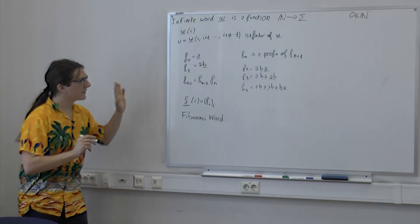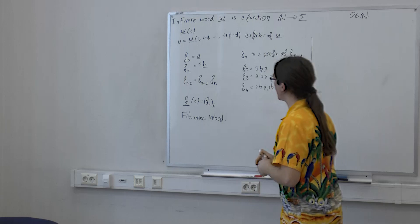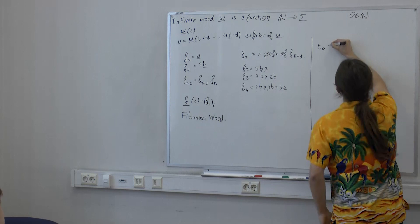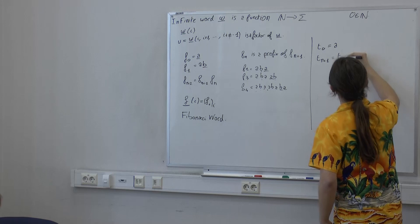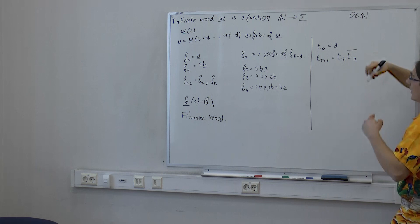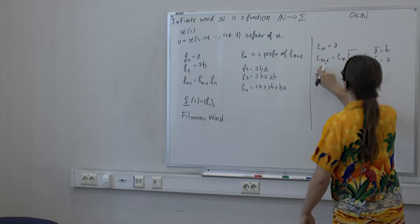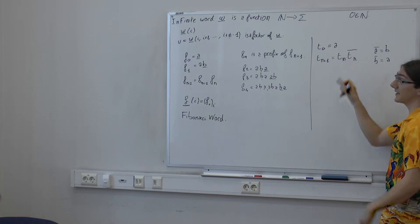Here is another extremely classical example. I start with just a and say that t_{n+1} = t_n · t̄_n, where the bar means you swap a and b — so a-bar equals b and b-bar equals a. You copy and take the negation. Once again it's obvious that t_n is a prefix of t_{n+1} and the length grows. Evaluating: t1 = ab, t2 = abba, t3 = abbabaab, and so on — it doesn't stop.